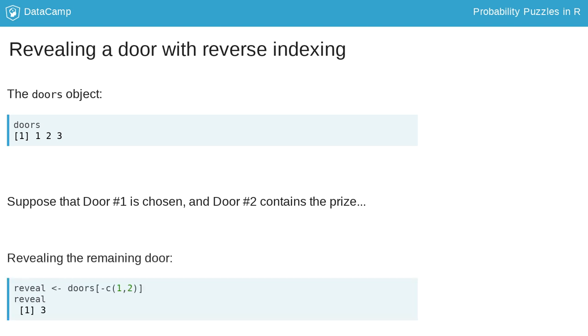From a coding standpoint, we must exclude doors one and two from the possibilities of doors to reveal. We can do this by using a minus index with the C concatenator to remove doors one and two as possibilities. Then, the value of the reveal is only door number three.